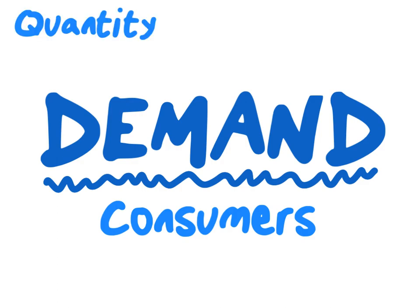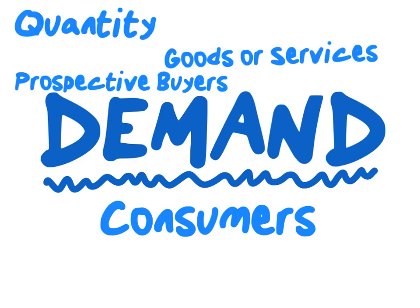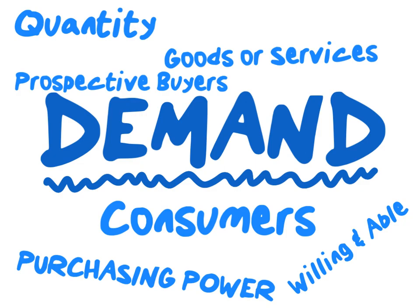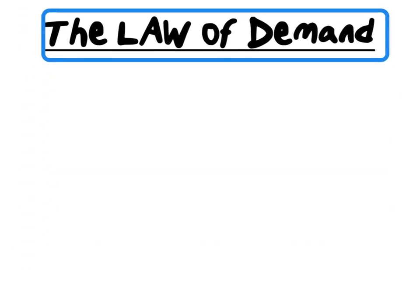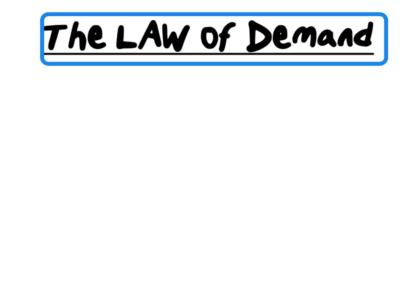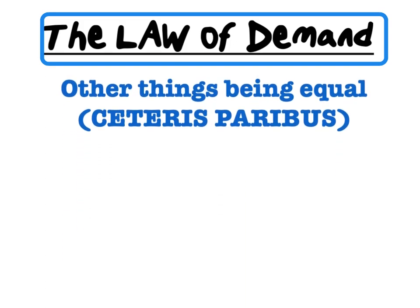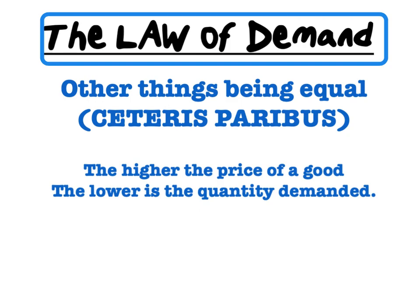Demand refers to the quantity of goods and services that prospective buyers are willing and able to purchase. The law of demand states the following: ceteris paribus — meaning all other things being equal — the higher the price of the good, the lower the quantity demanded. Keeping in mind that our consumers are cheapskates, the law of demand makes sense: the higher the price, the lower the amount demanded.